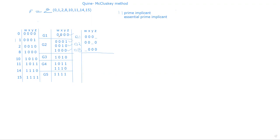Now we compare Group 2 and Group 3. For example, taking minterm 1 (0001) and minterm 10 (1010): W changes from 0 to 1, Y changes from 0 to 1, and Z changes from 1 to 0 — that is three variables changing. This combination should not be taken because there are three changes. You should only take combinations where only one variable is changing.